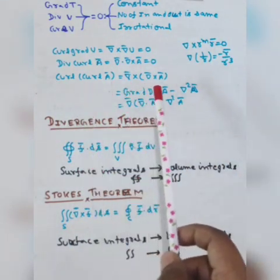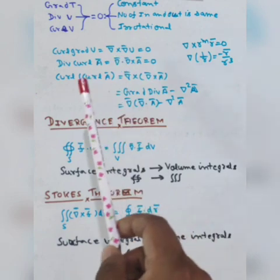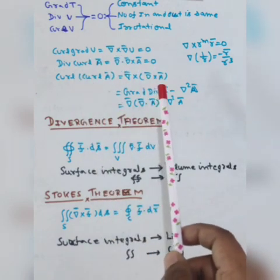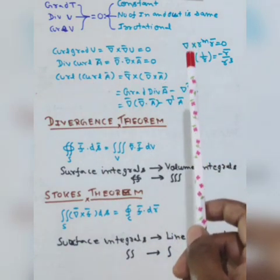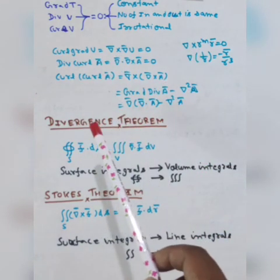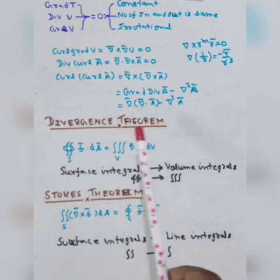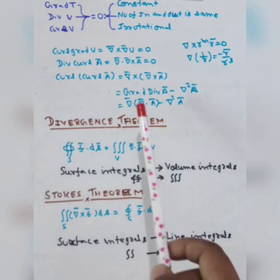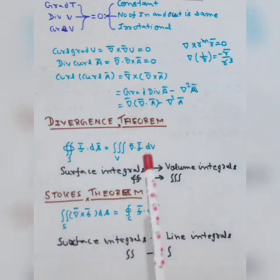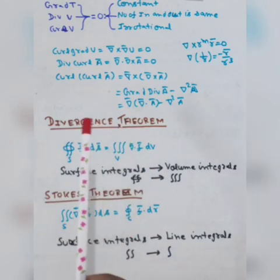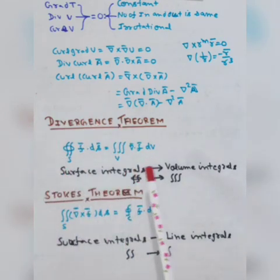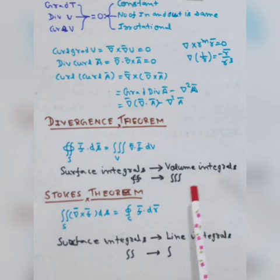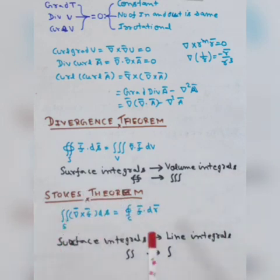Here I am using two important formulas: the Divergence theorem and Stokes theorem. In the case of the Divergence theorem, we convert the surface integration into volume integration, and in Stokes theorem, we convert the surface integration into line integration.